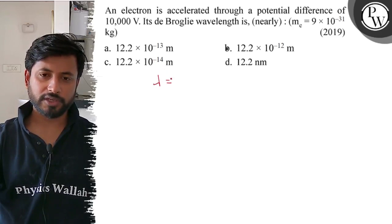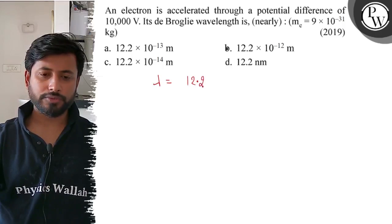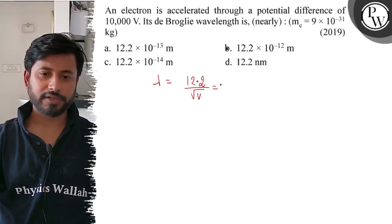The de Broglie wavelength of an electron is lambda equals 12.2 divided by root V, where root V is the accelerating voltage.